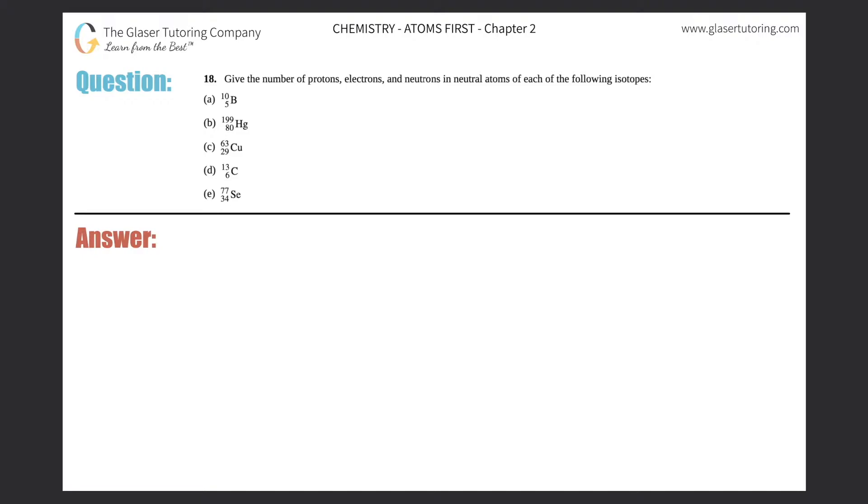Number 18. Give the number of protons, electrons, and neutrons in neutral atoms of each of the following isotopes. Then I see I have A through E, so A, B, C, we'll do D down here, and E over here. Okie dokie.